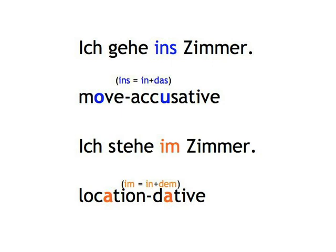Note that you use a contracted form of the preposition and article where possible. You say ins, short for in das, and im, short for in dem. This is more elegant and not so cumbersome.